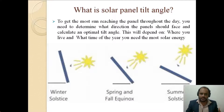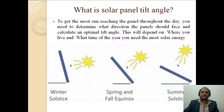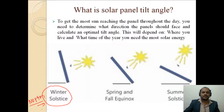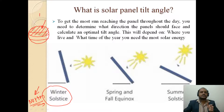To get the most sun reaching the panel throughout a day, you need to determine which direction the panel should face and calculate an optimum tilt angle. This depends on where you live and what time of year you want the most solar energy. In the northern hemisphere, when there is winter, we try to incline the solar panel at a higher tilt angle — the beta angle can be more than 45 degrees.